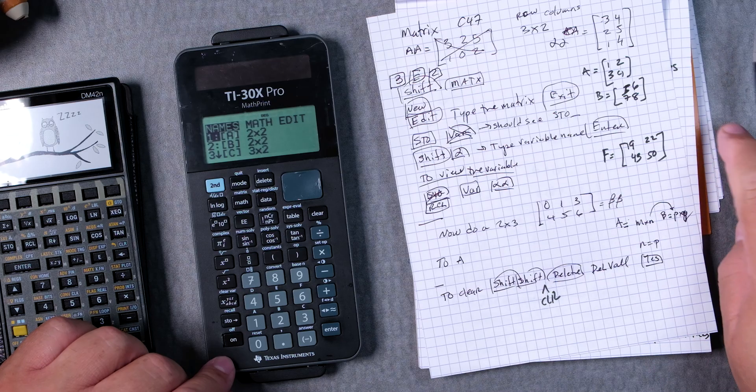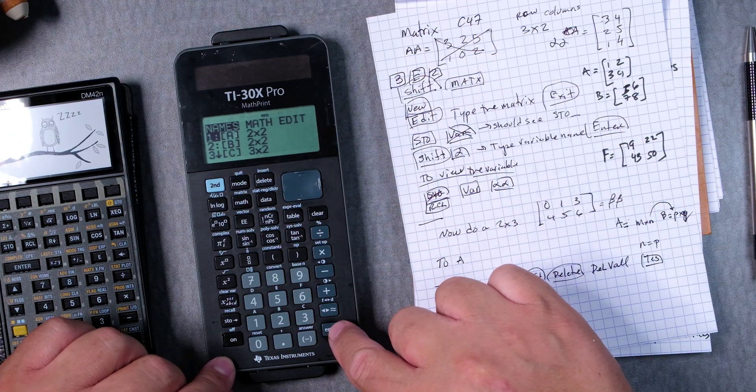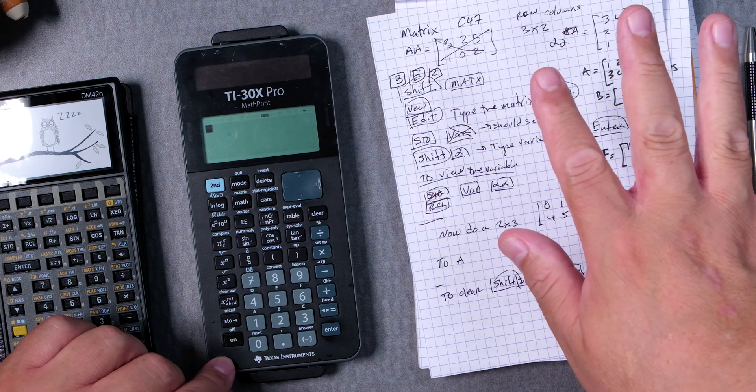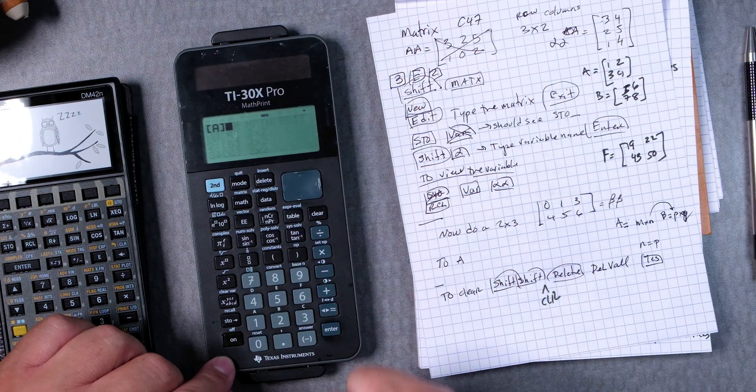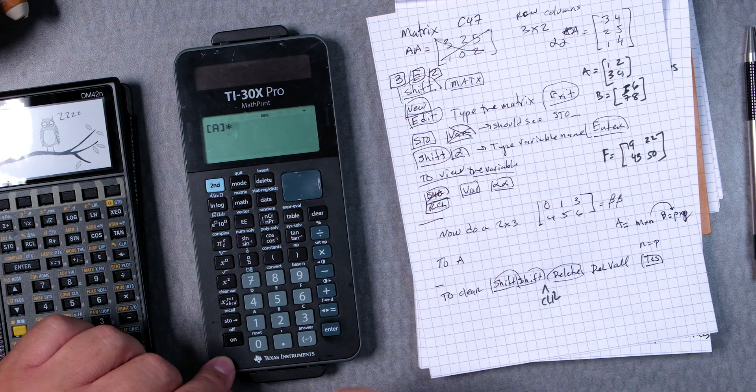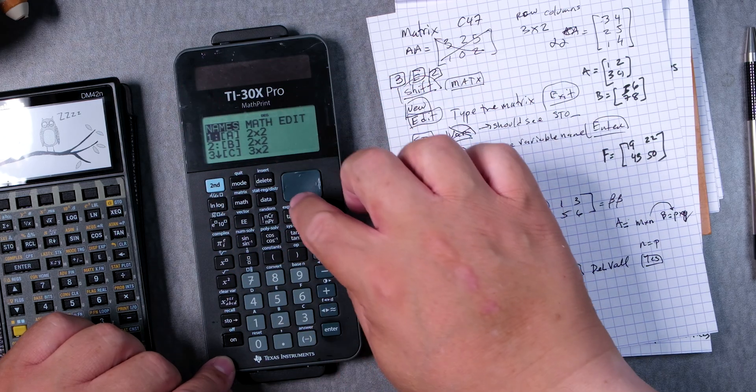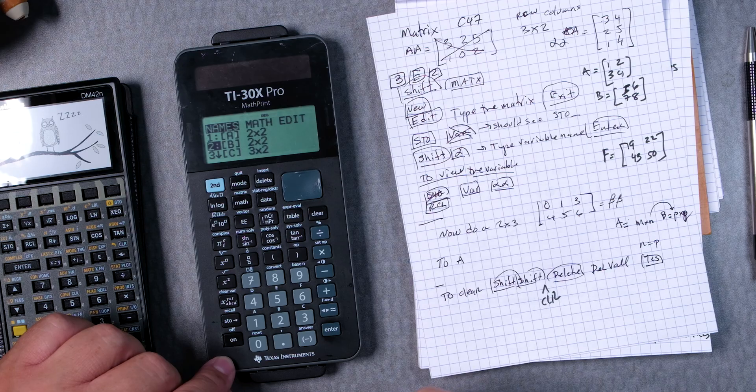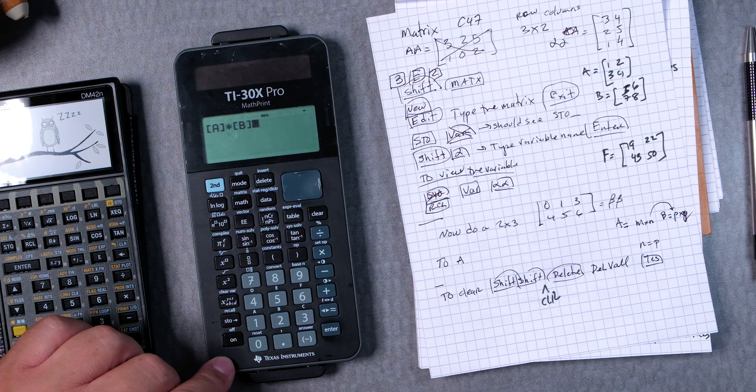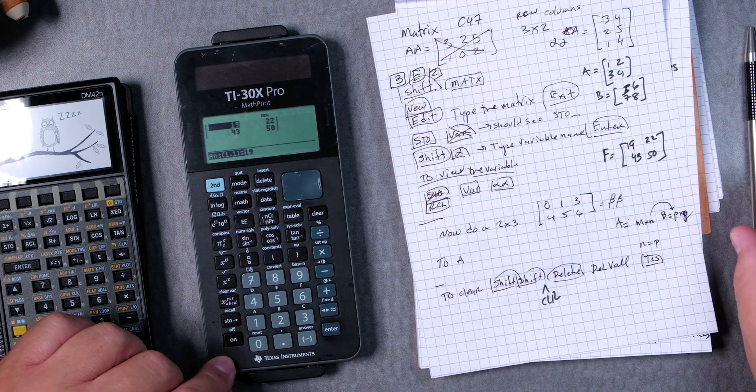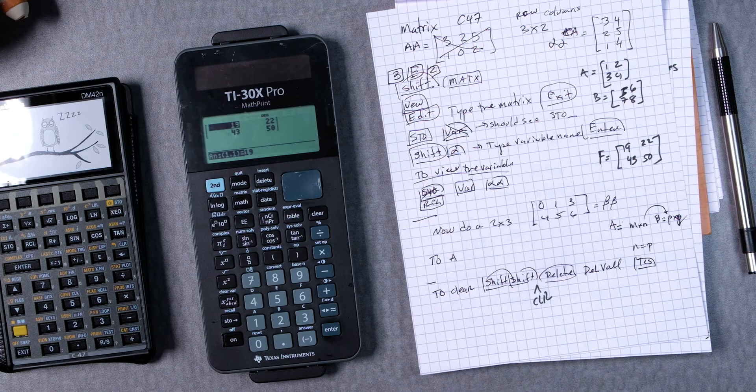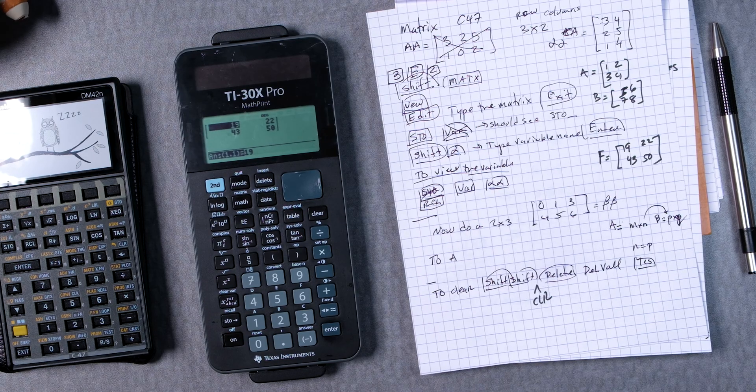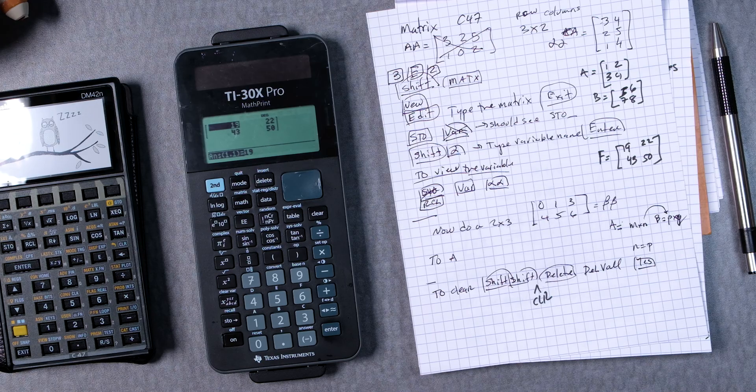Now we're going to take A. Let's quit. We have it stored. Second matrix, we can press one for A times, second matrix, scroll down to two. So A times B, you enter, and it gives us 19, 22, 43, and 50. See that? That came out perfectly for multiplying the matrices.